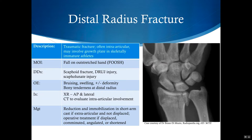Non-displaced extraarticular fractures can be treated with reduction and immobilization in a short arm cast. Displaced, comminuted, angulated, or shortened fractures should be referred to orthopedics. And just like with any fracture, you should always do a neurovascular exam. And if there's any neurovascular compromise, then they need urgent reduction and orthopedic assessment.